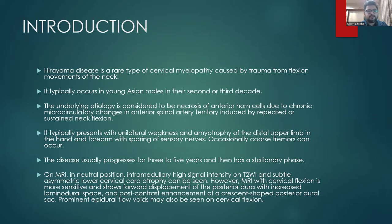It typically presents with unilateral weakness and amyotrophy of the lateral upper limb in the hand and forearm with sparing of the sensory nerves. Occasionally, coarse tremors can also be seen. The disease usually progresses for three to five years and then has a stationary phase.